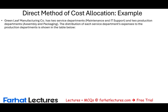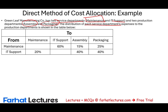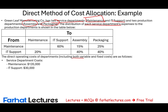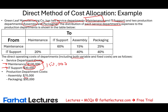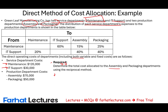We have Greenleaf Manufacturing — the same company from the prior two methods — with two service departments: Maintenance (S1) and IT Support (S2), and two production departments: Assembly (P1) and Packaging (P2). The direct operating costs, including both variable and fixed, are: Maintenance $120,000, IT Support $30,000, totaling $150,000 for service departments. Assembly is $70,000 and Packaging is $50,000, totaling $120,000 for production. We need to determine the total cost allocated to Assembly and Packaging using the reciprocal method.